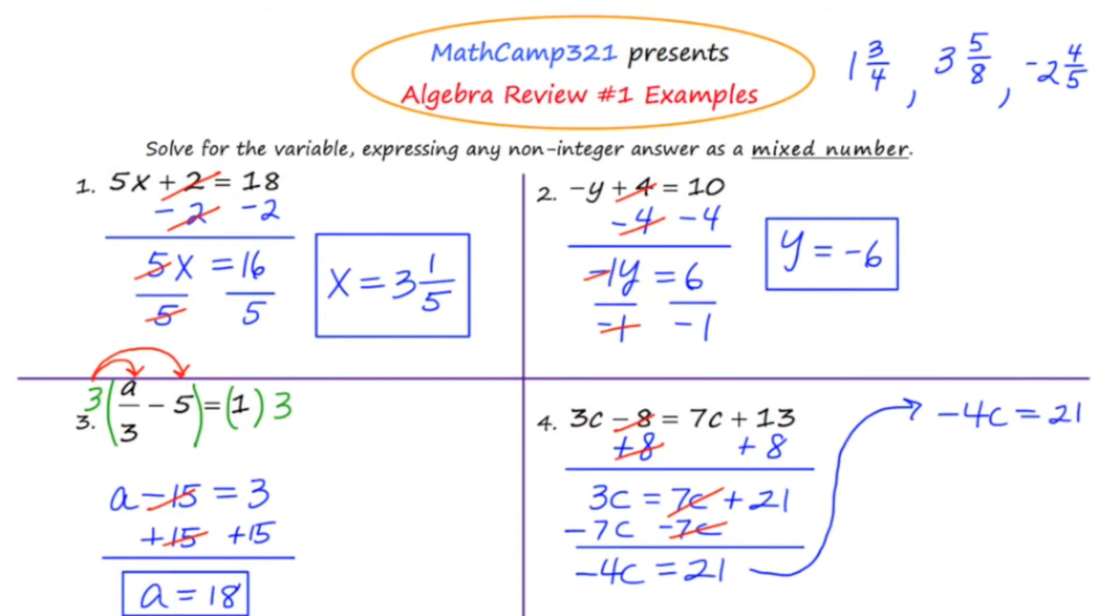I'm going to go ahead and divide both sides by negative 4 to get rid of that negative 4 and get c completely isolated. The negative 4s are going to cancel out, and I'm left with c equals negative 21/4. This is going to have to be converted into a mixed number. I know the answer is going to be negative, so I'll start with that. How many times does 4 fit into the number 21? The answer is 5 with 1 left over. So the answer is negative 5 and 1/4.